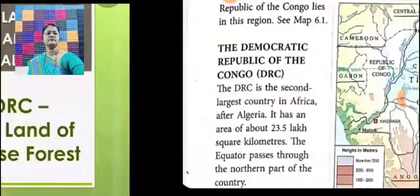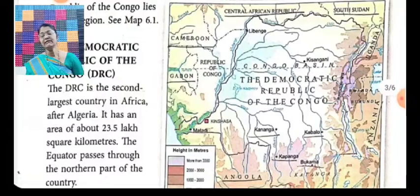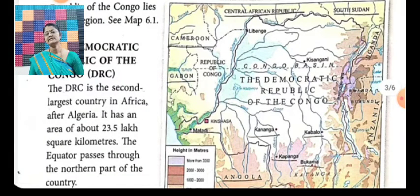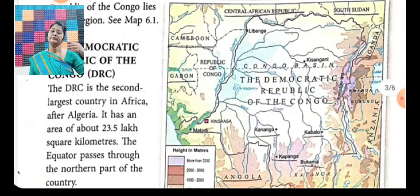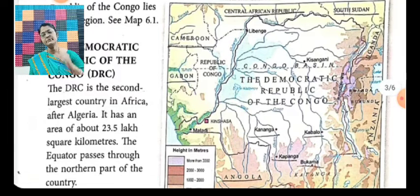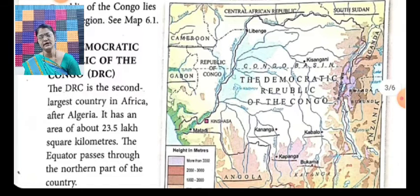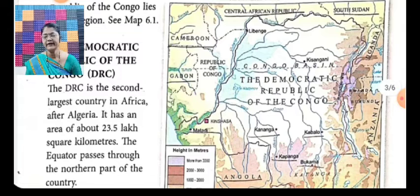The region between the Tropic of Cancer and the Tropic of Capricorn is the equatorial region — woe area jo Tropic of Cancer aur Tropic of Capricorn ke beech mein hai, woh equatorial region hota hai. This region has a hot and wet climate.